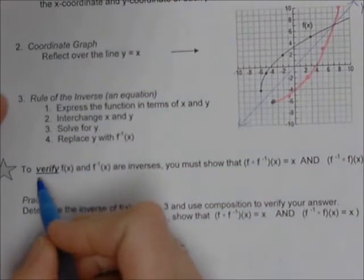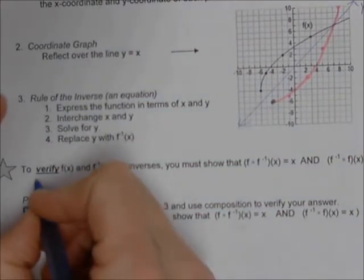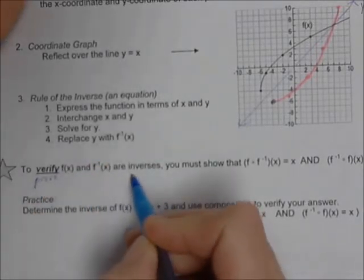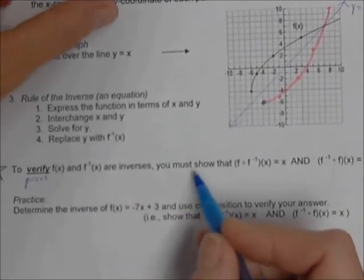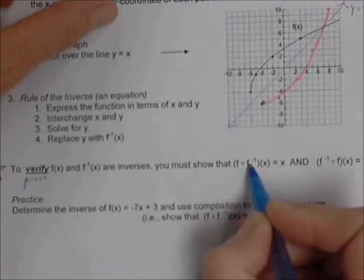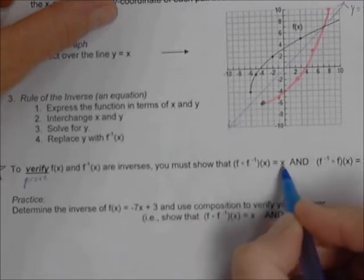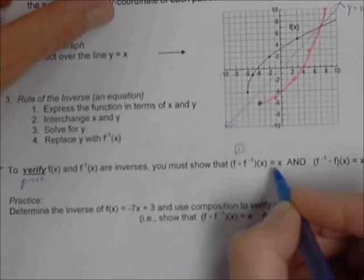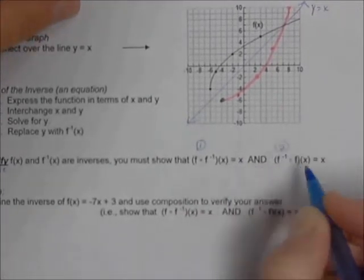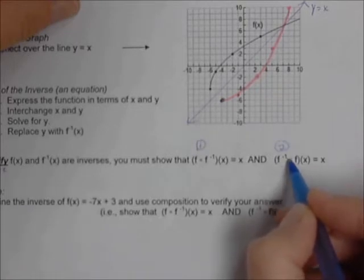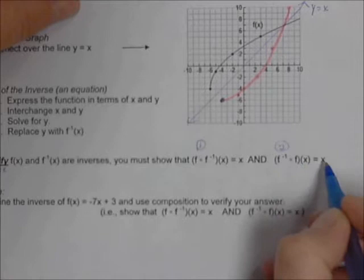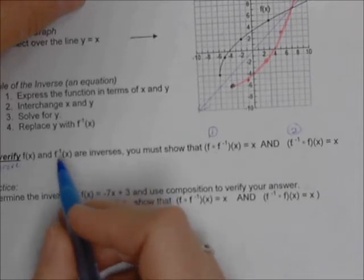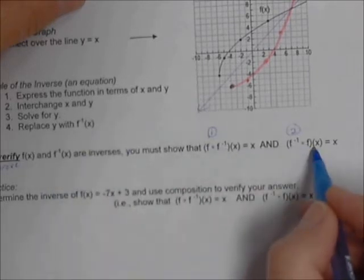The part we didn't do is at the bottom — to verify, which also means to prove, that f and f inverse are actually inverses. This is a proof where you have to show that the original function in composition with the inverse function is equal to x. Then secondly, you take the inverse and do a composition with the original function, and that also has to equal x. The proof has two steps, and they both involve composition.